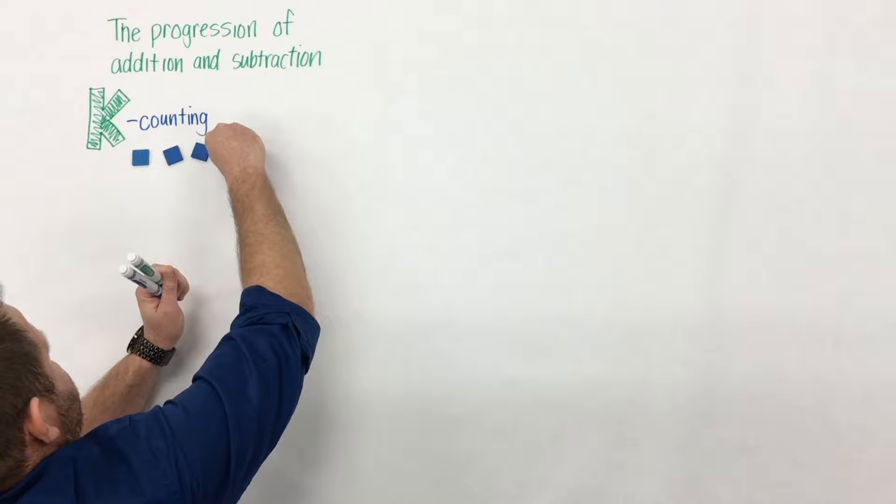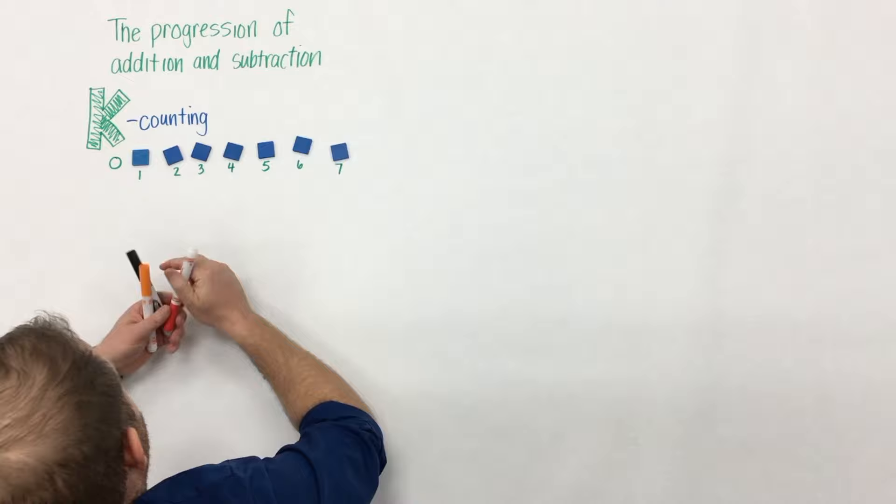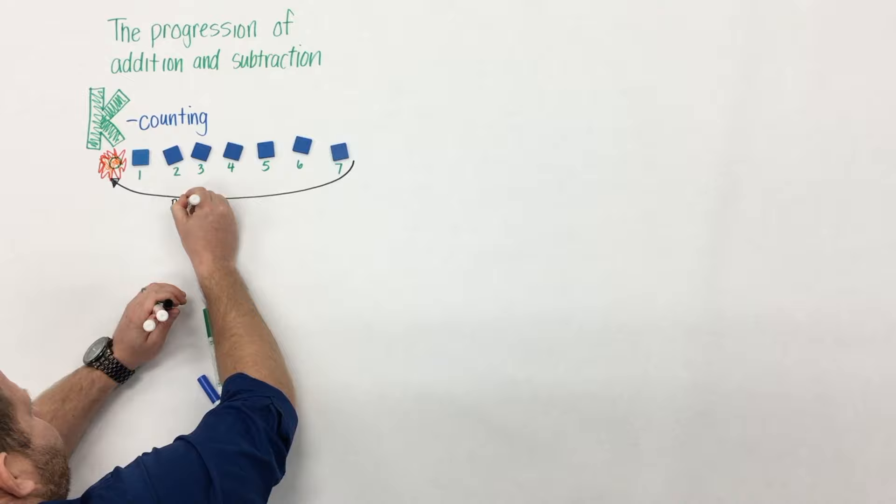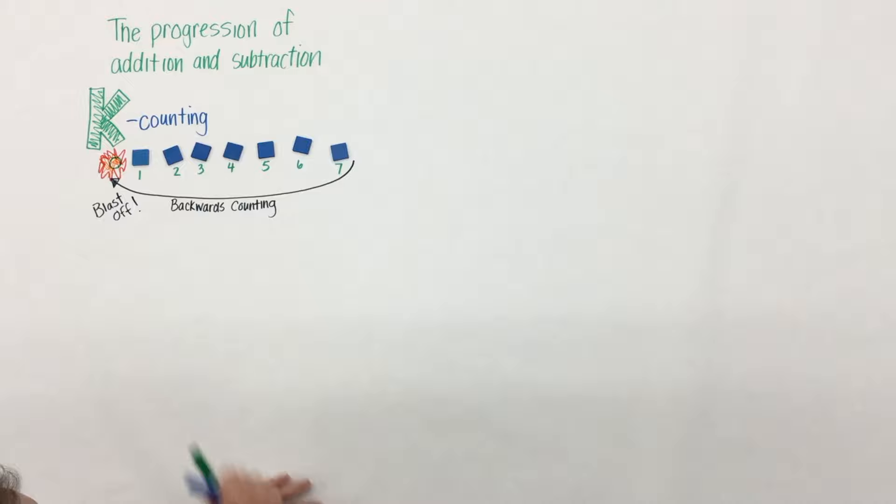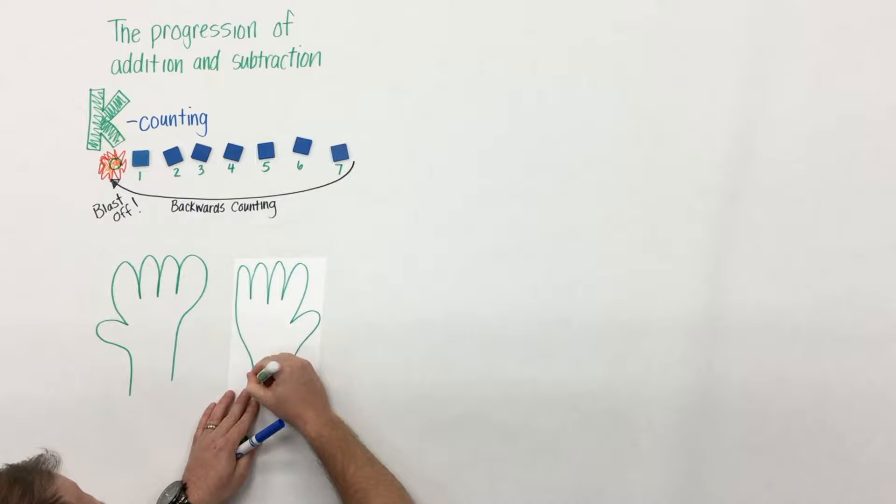Addition and subtraction begin in kindergarten when students begin to count. They begin to count objects and sets, counting forwards and backwards. A big thing to remember is when we're counting forwards or backwards that we include the number zero. And when we're counting backwards let's not have them include blastoff because blastoff isn't necessarily a number.